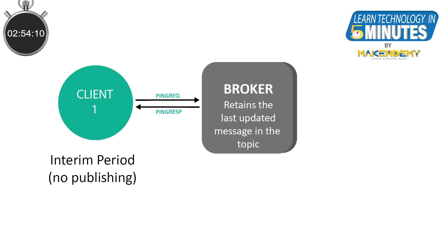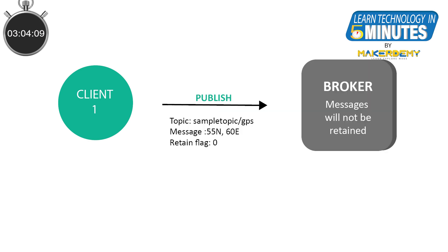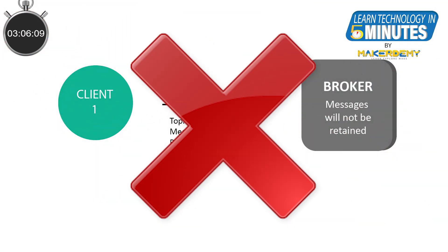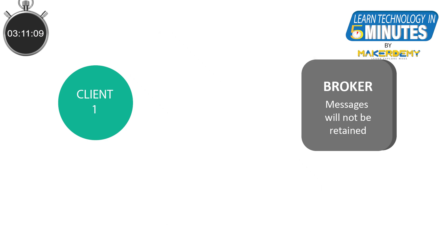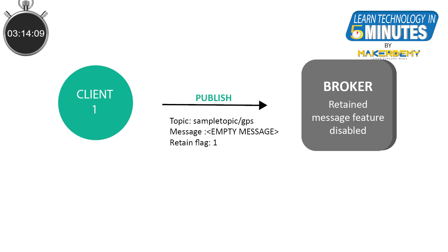We also need to know how to disable the retained feature of a particular topic. It is not as simple as sending a message with the retained flag set to 0, as this is itself the normal condition we had initially. The right way to do this is to send an empty message to the same topic with the retained flag set to 1. This might seem counterintuitive, but it was intentionally done to avoid conflicts with any real-time publishing happening to the same topic without the retained flag set to 1.